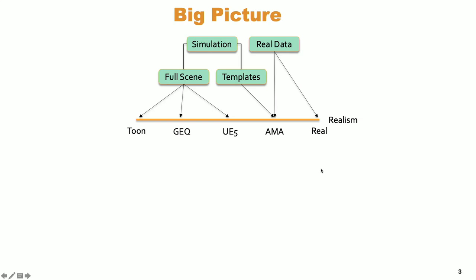We had a few different data types going into this algorithm — simulated and real data. On the simulated data side, we go across a spectrum of abstraction of reality. We start at the cartoony end with very abstracted features, to game engine quality — abbreviated as GEQ — which is a little more detailed, all the way up to incredibly detailed UE5 data, which is Unreal Engine 5, typically used for video game rendering.